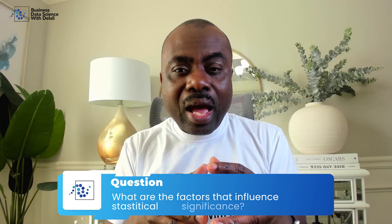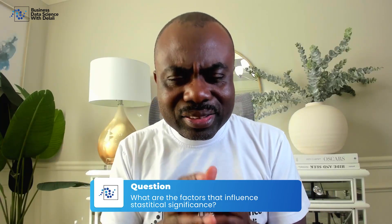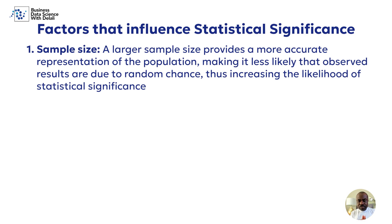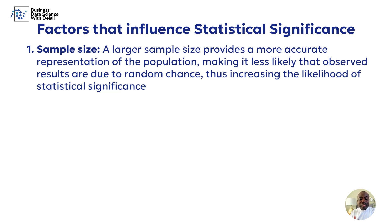Now, what are the factors that affect statistical significance? There are three common factors. Number one: sample size. The larger the sample size, the less likely your finding is due to chance, because a large sample is a good representation of your population, so findings from it are less likely to be coincidental.